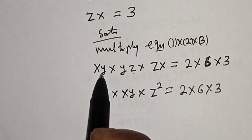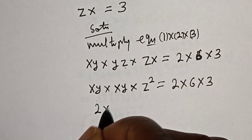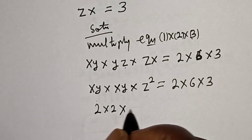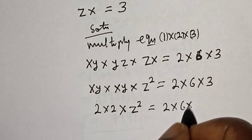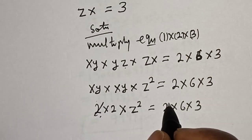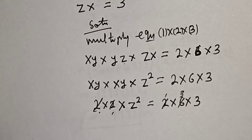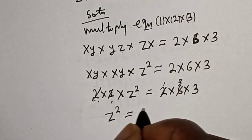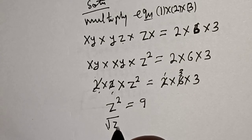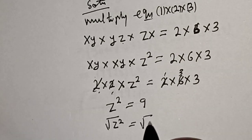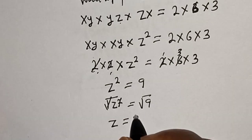Now we know xy is equal to 2, so substituting: 2 multiplied by 2 multiplied by z² is equal to 2 times 6 times 3. Simplifying, z² is equal to 9. Taking the square root of both sides, z is equal to plus or minus 3.